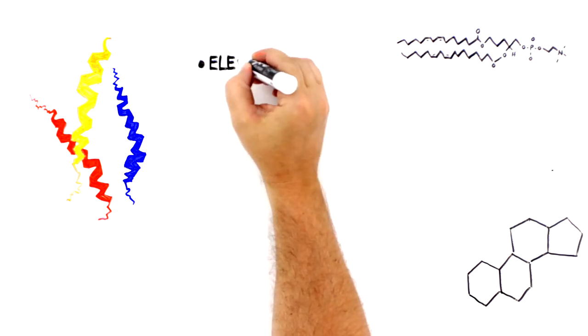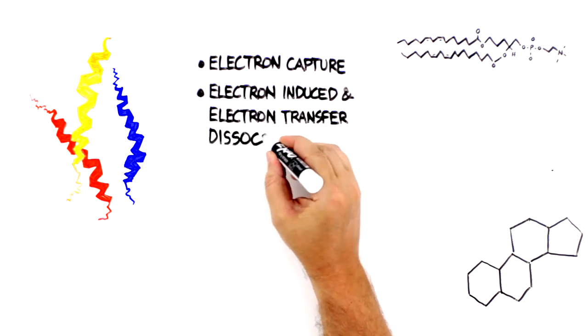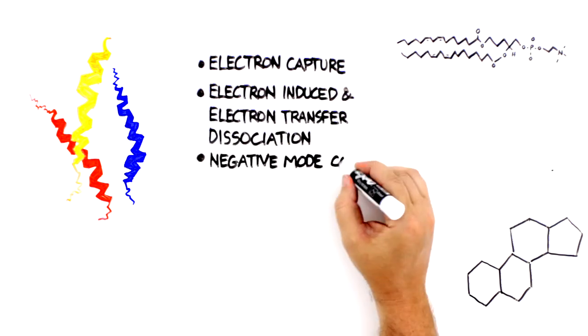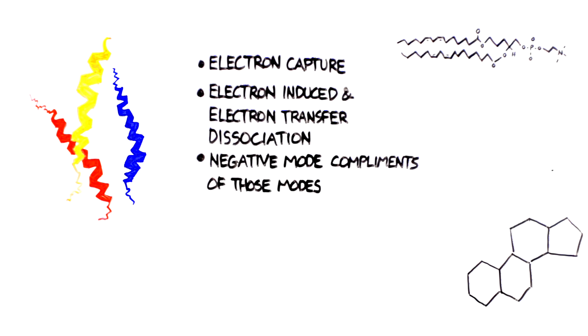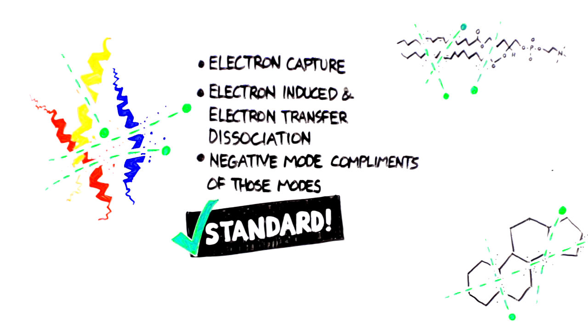And to unravel structural mysteries, Symax has more fragmentation modes than any other platform. Using high-energy collisional, electron capture, electron induced, and electron transfer dissociation, as well as the negative mode complements of those modes, unravel protein complexes, sequence lipids and locate double bonds, and access structures of small molecules that collisions could never find. All standard.